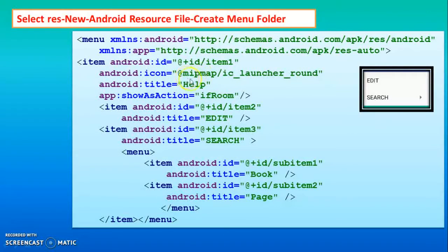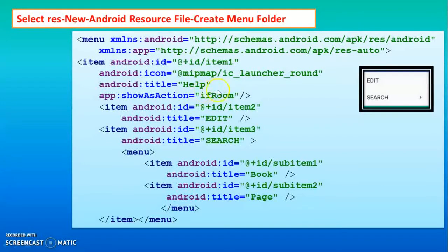In place of 'ifRoom' you can also use the value 'always'. If you use 'always', then that option will appear in the toolbar area regardless. However, the toolbar area has limited space, so it is better to use the value 'ifRoom'.